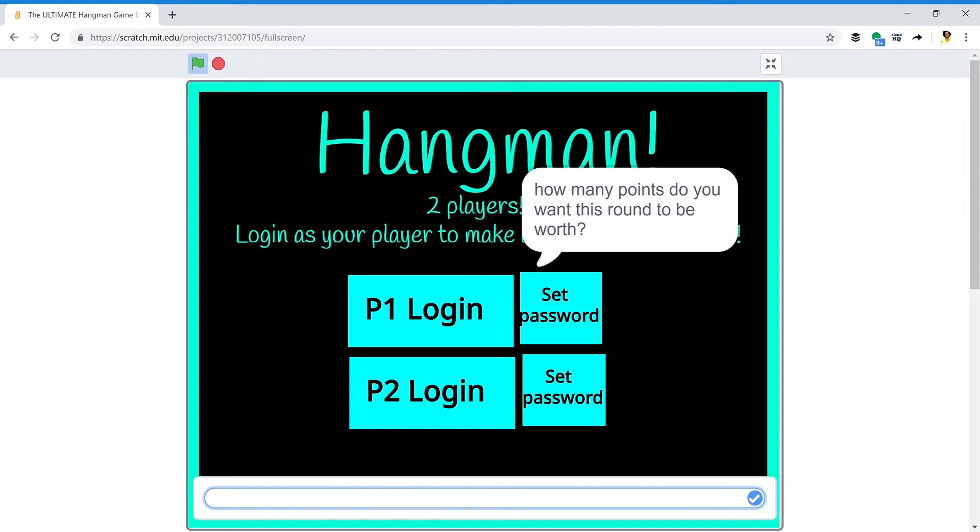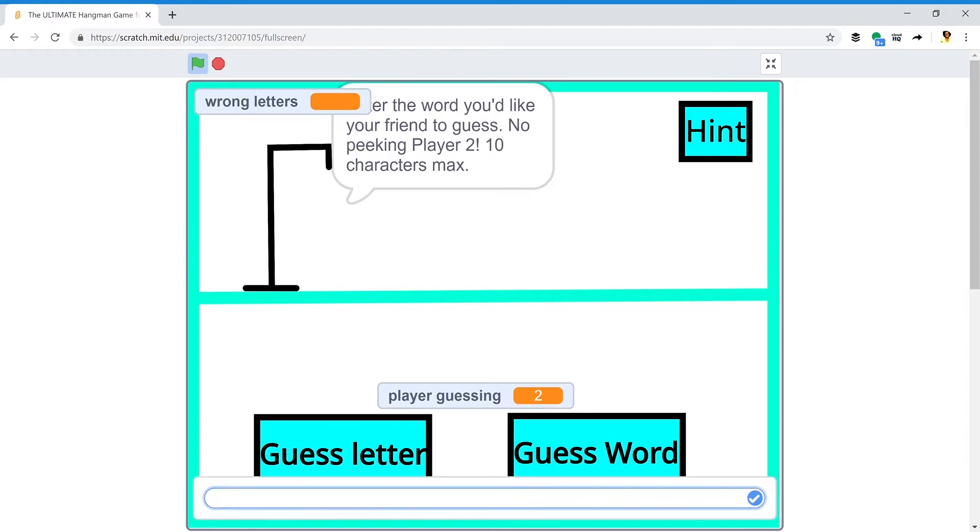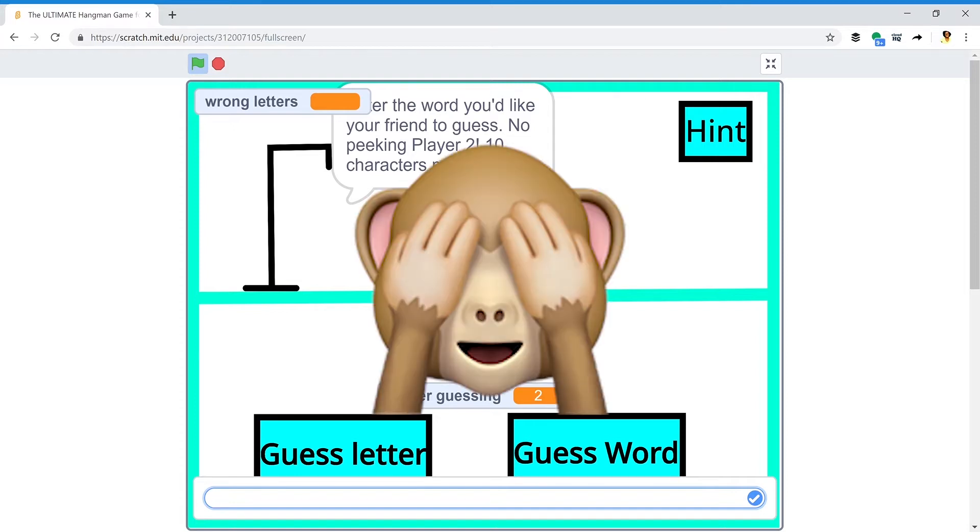And this round will be worth 50 points. So player one, enter the word you'd like your friend to guess. No peeking player two, 10 characters max. So I'm going to put no looking mommy.